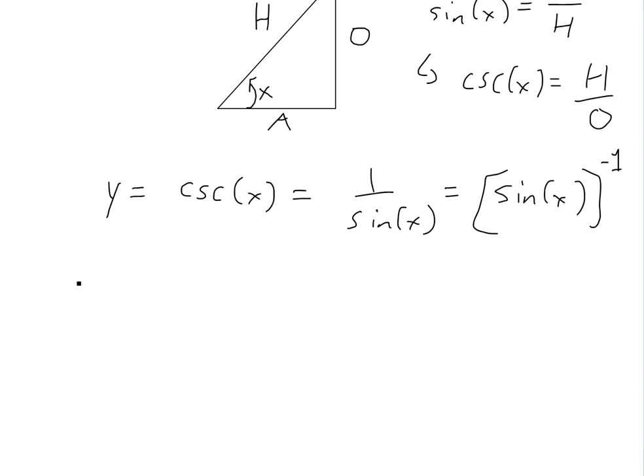And then if we take the derivative, y prime, we bring down this negative 1 using the power rule for derivatives. You can see the video link below on proof of this. We're going to get sine of x all to the power of negative 1 minus 1, which is negative 2.